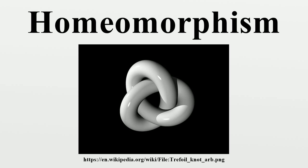Roughly speaking, a topological space is a geometric object, and the homeomorphism is a continuous stretching and bending of the object into a new shape. Thus, a square and a circle are homeomorphic to each other, but a sphere and a torus are not. An often repeated mathematical joke is that topologists can't tell the difference between a coffee cup and a doughnut, since a sufficiently pliable doughnut could be reshaped to the form of a coffee cup by creating a dimple and progressively enlarging it, while preserving the doughnut hole in the cup's handle.